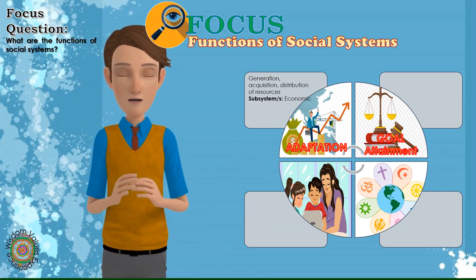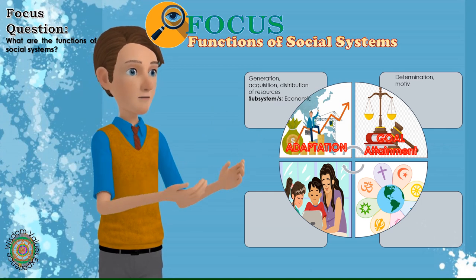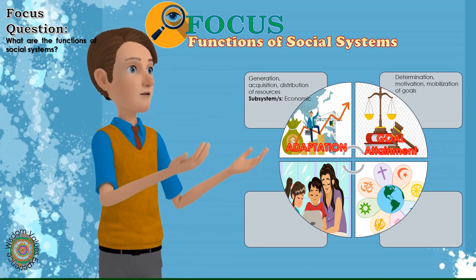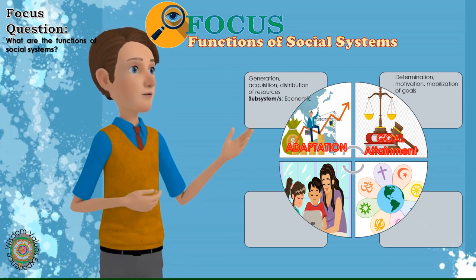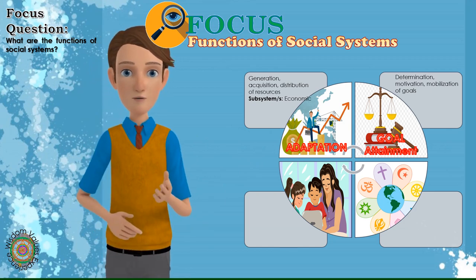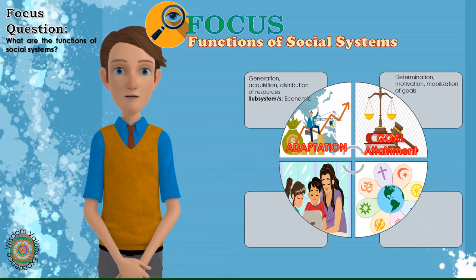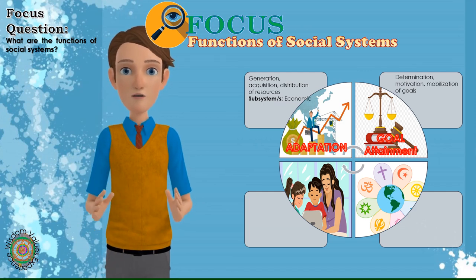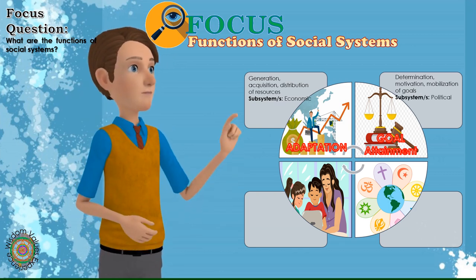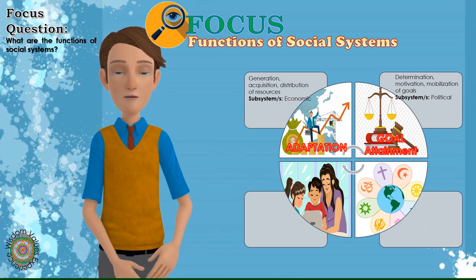2. Goal Attainment: Goal attainment is that functional prerequisite which involves, firstly, the determination of goals; secondly, the motivating of members of the system to attain these goals; and thirdly, the mobilizing of the members and of their energies for the achievement of these goals. Its processes are consummatory in character although it does involve external interaction. The organization of the power and authority structure in a social system is an example of an institution where goal attainment is the primary thrust. The political processes are its examples. Goal attainment is related to the ideological and organizational setup of the social system.